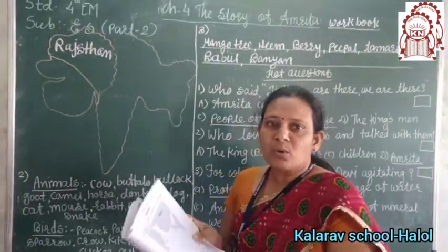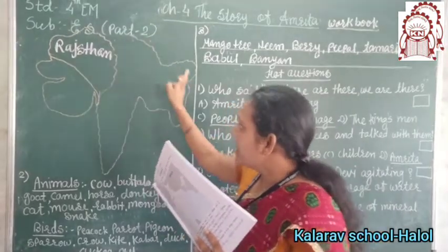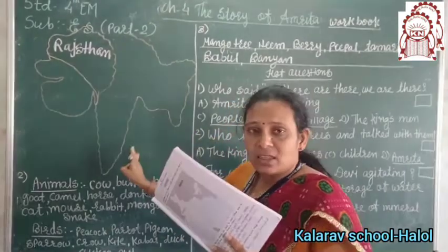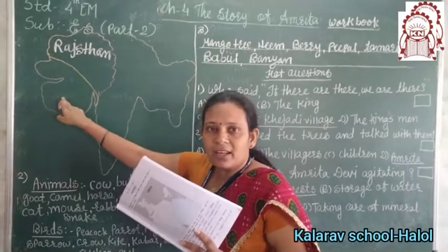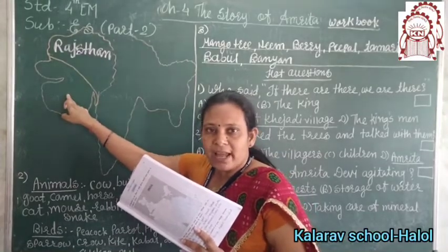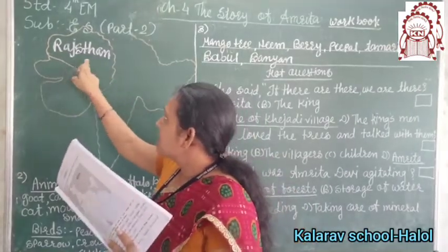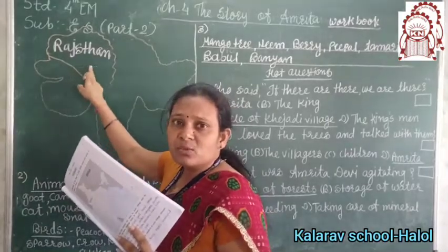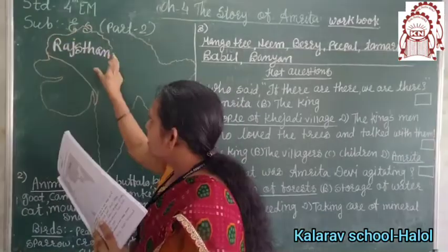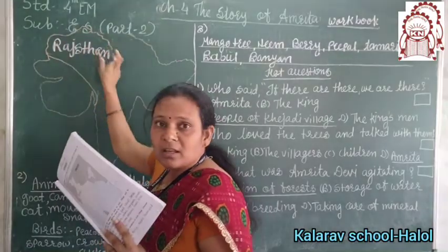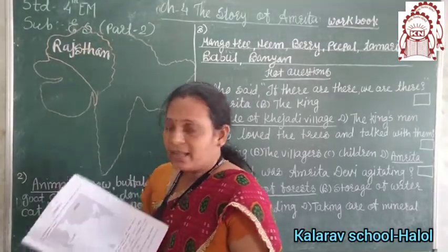You have to show only Rajasthan. Here I have partially drawn the map of India. Here is Gujarat. The upper red side — this is Rajasthan. So everyone has to write here 'Rajasthan' and take one color and color in the state of Rajasthan.